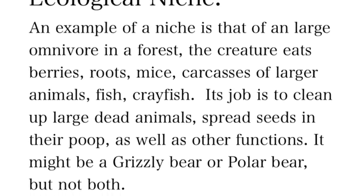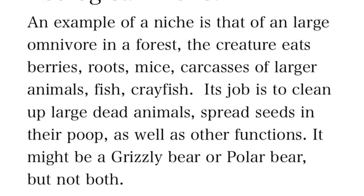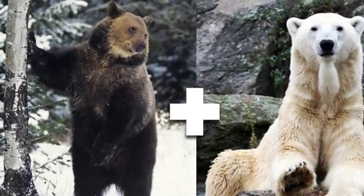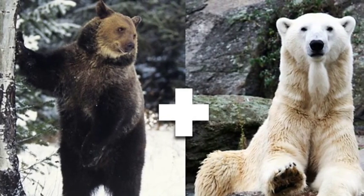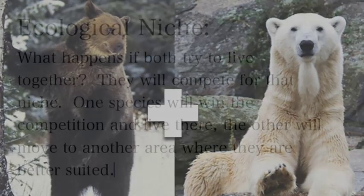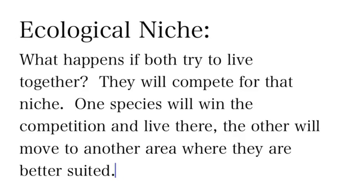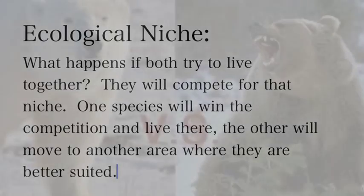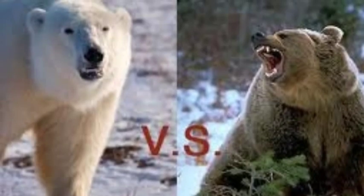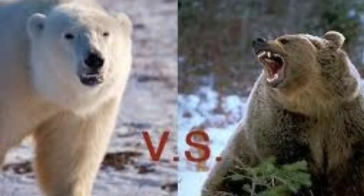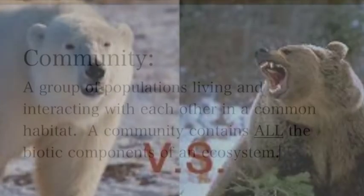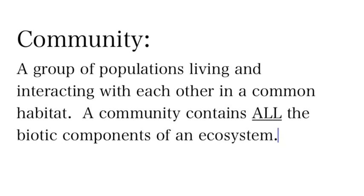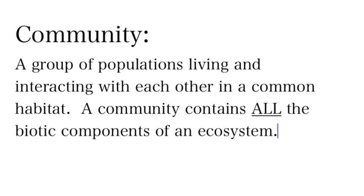For example, if you have a large omnivore that eats berries, mice, and dead animals, and disperses seeds through its droppings, that niche could be filled by either a polar bear or a grizzly bear. But if both try to live together, they're going to compete and fight, and one will stay while the other leaves — dead or alive. That's what determines which species occupies a given niche in an area.